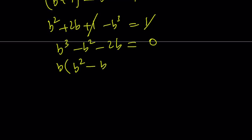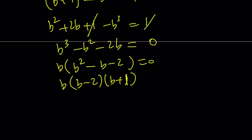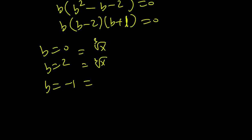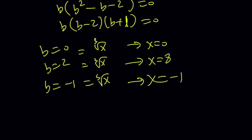Factoring: b(b squared minus b minus 2) equals 0, which gives b(b minus 2)(b plus 1) equals 0. From here, b equals 0, b equals 2, and b equals negative 1. But remember, b is cube root of x, so we get three solutions as before: x equals 0, x equals 8, and x equals negative 1.